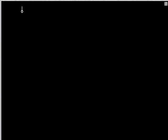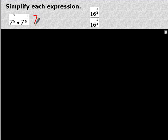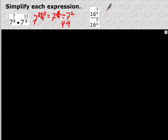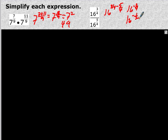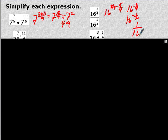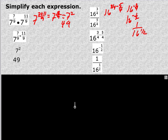Let's look at some examples. Simplify: add the two exponents — 7 to the 7/9 power times 7 to the 11/9. They have a common denominator, so 7 plus 11 ninths gives 7 to the 18/9, and 18 divided by 9 is 2, so this is 7 squared which equals 49. For the division example: 16 to the 3/4 divided by 16 to the 5/4 — same base, subtract exponents: 3/4 minus 5/4 is negative 2/4, which is 16 to the negative 1/2. To make it positive, write it as 1 over 16 to the 1/2.